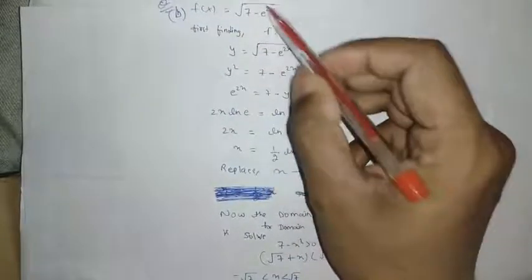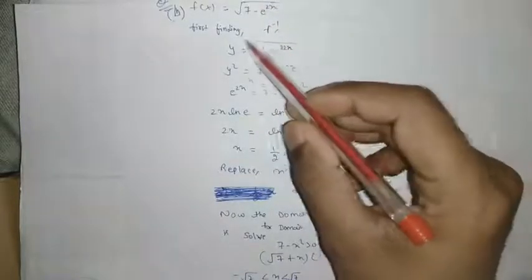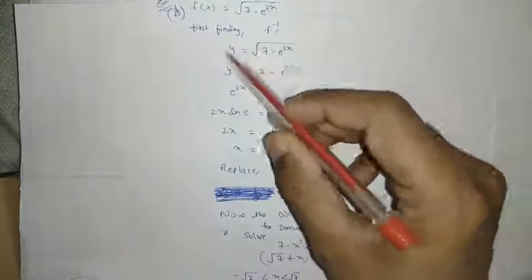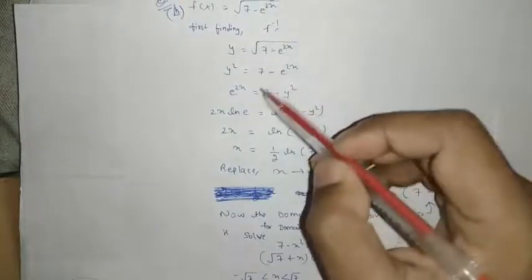We have the same function here. So finding the x values in terms of y. Just solve it and square both sides: y² = 7 - e^(2x).